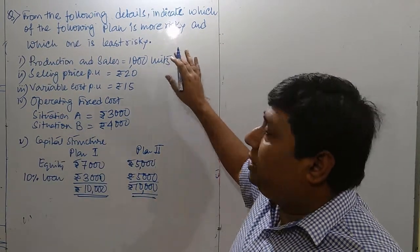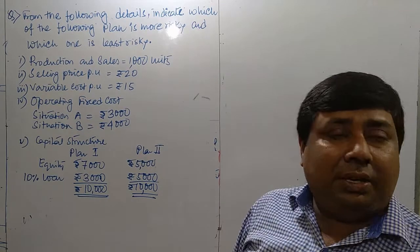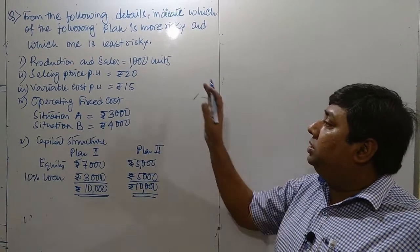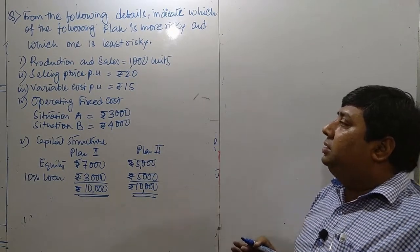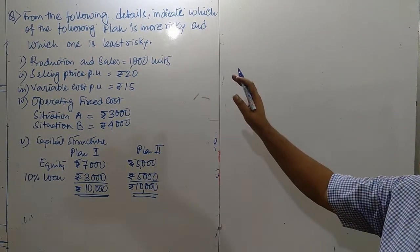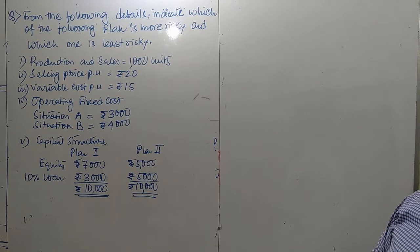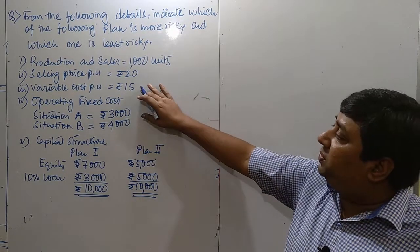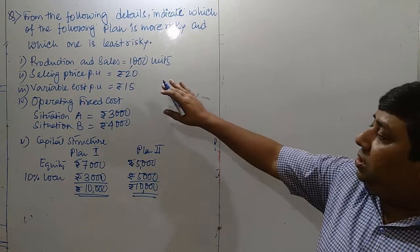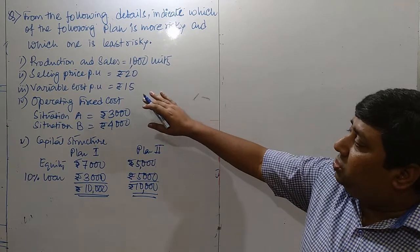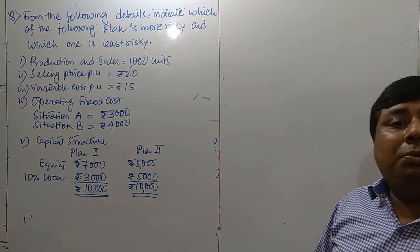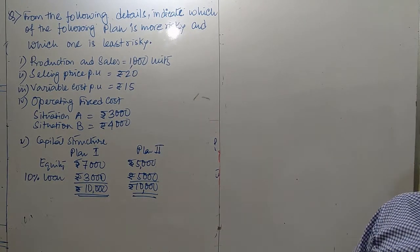One by one: production and sales — it is mentioned over here as 1000 units. Selling price per unit is Rs. 20, variable cost per unit is Rs. 15. For operating fixed cost, there are two situations: situation A and situation B.